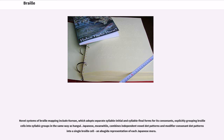Novel systems of Braille mapping include Korean, which adopts separate syllable-initial and syllable-final forms for its consonants, explicitly grouping Braille cells into syllabic groups in the same way as Hangul. Japanese, meanwhile, combines independent vowel dot patterns and modifier consonant dot patterns into a single Braille cell — an abugida representation of each Japanese mora.